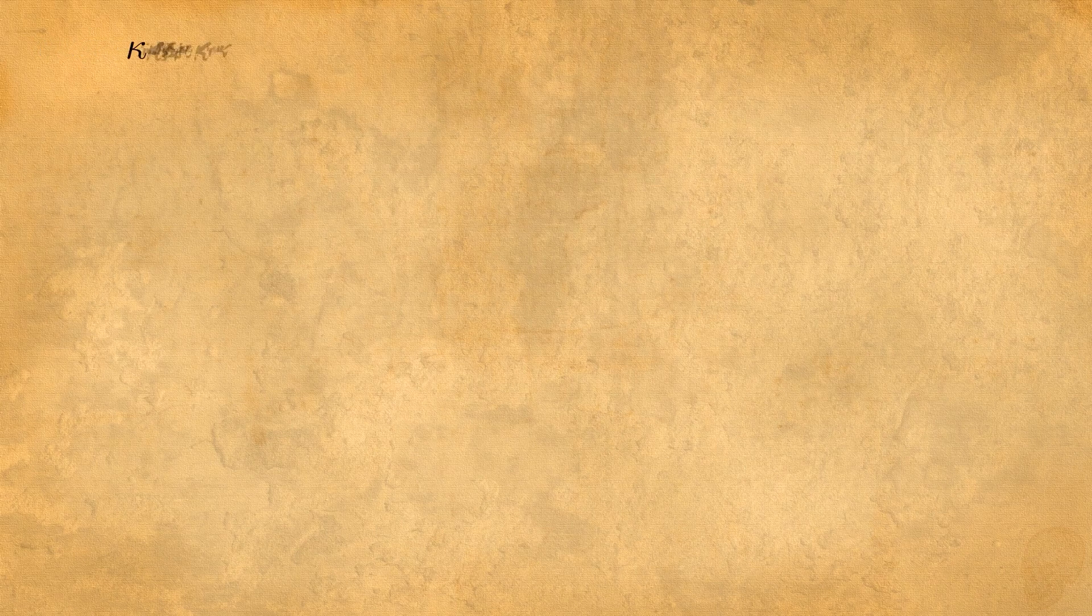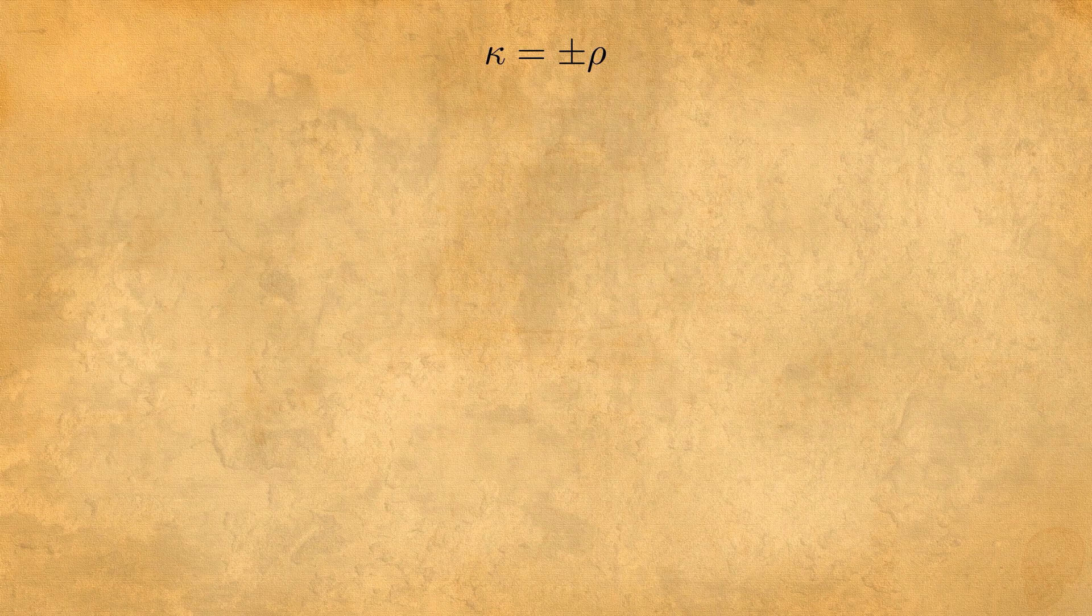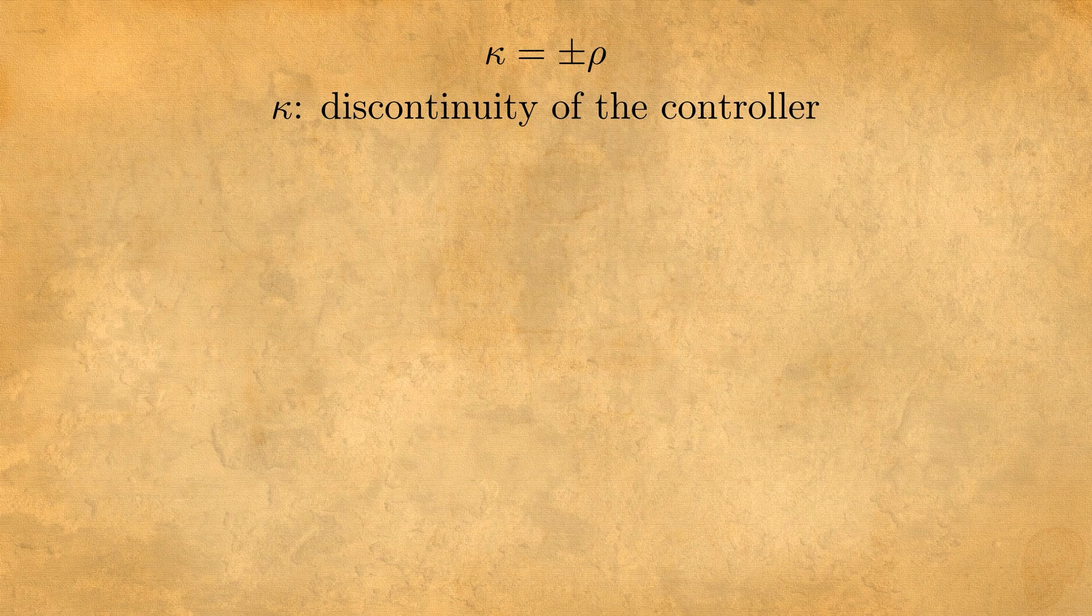Most of the time they choose rho sign of s as kappa where rho is bigger than L, it's important. Basically kappa is just plus or minus rho all the time. This is representing the discontinuity of the controller.